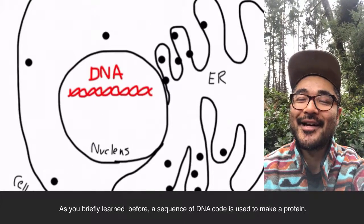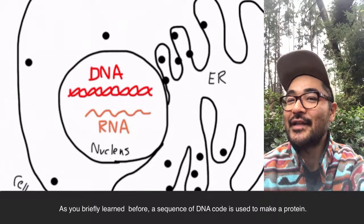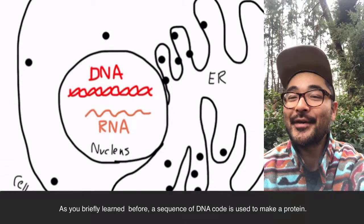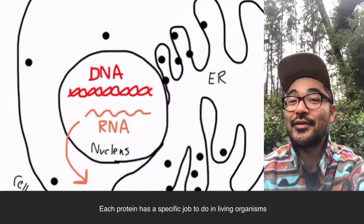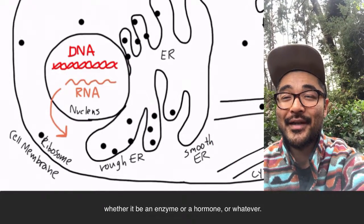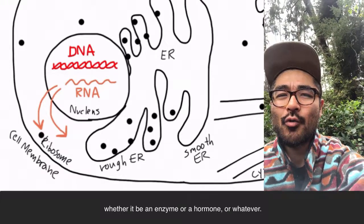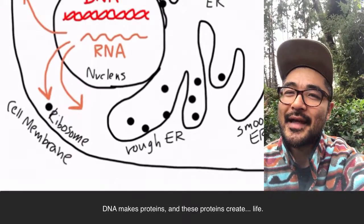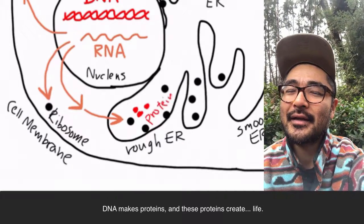As you briefly learned before, a sequence of DNA code is used to make a protein. Each protein has a specific job to do in living organisms, whether it be an enzyme or a hormone. DNA makes proteins and these proteins create life.